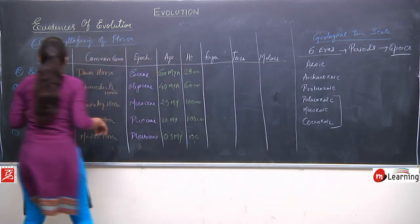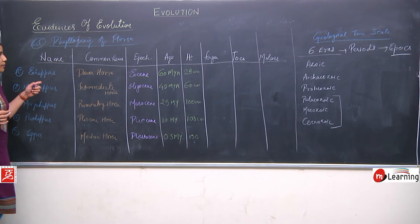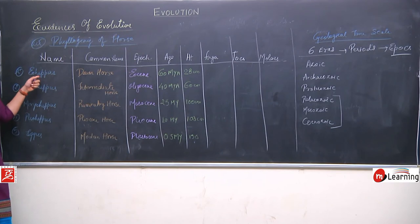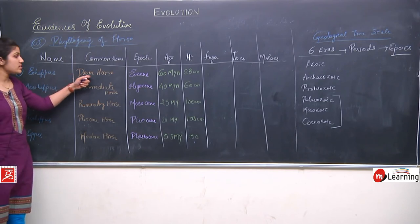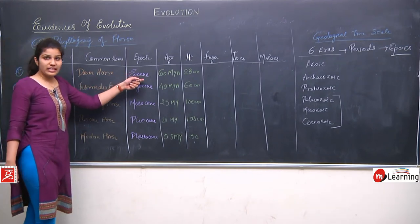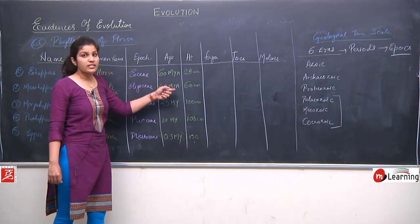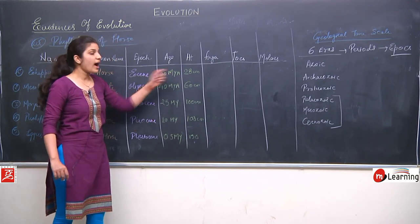For the phylogeny of the horse, the first and most primitive ancestral horse was Eohippus, also called the dawn horse. The first fossil was found in the Eocene epoch and is around 60 million years old. Its height was only 28 centimeters.